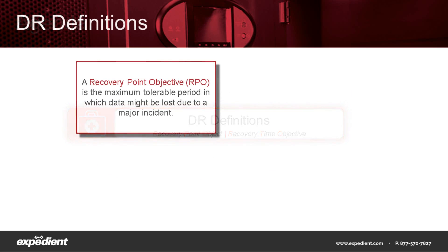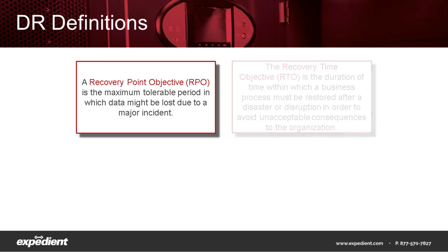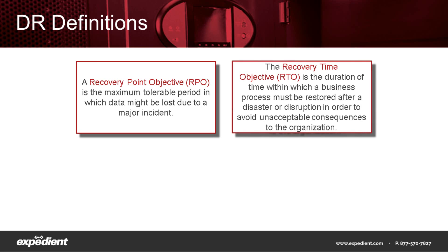A simple way to look at a recovery point objective is to think of it as the maximum amount of data that an organization is willing or able to lose. Another way to look at a recovery point objective, or an RPO, is how frequently data is being replicated to a DR platform. A recovery time objective, or an RTO, is the amount of time it will take for applications and data to be presented back to end users after a disaster has taken place.